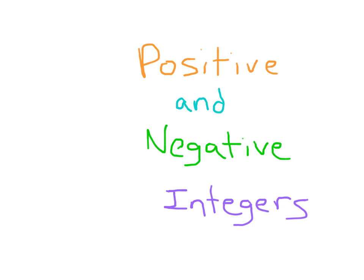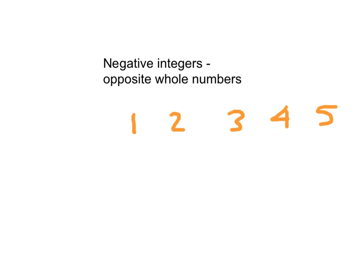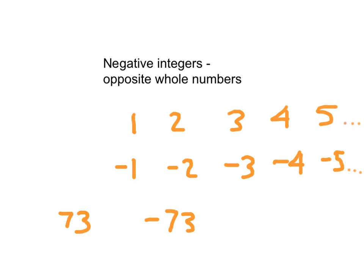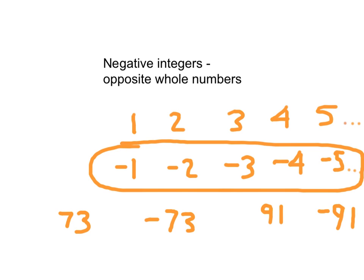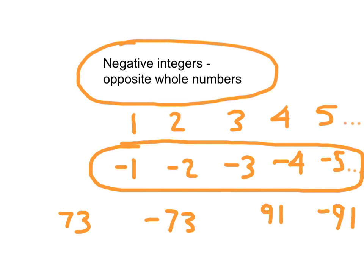Let's look at positive and negative integers. Our negative integers are the opposite of the whole numbers. So we have the whole numbers 1, 2, 3, 4, 5, and so forth. The opposite of those are negative 1, negative 2, negative 3, negative 4, negative 5, and so forth. So the opposite of 73 is negative 73, and the opposite of 91 is negative 91. That whole set of numbers are called our negative integers.